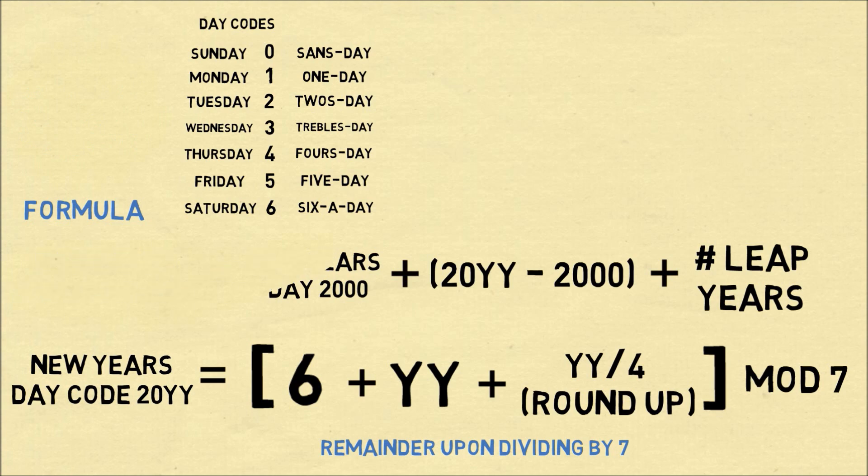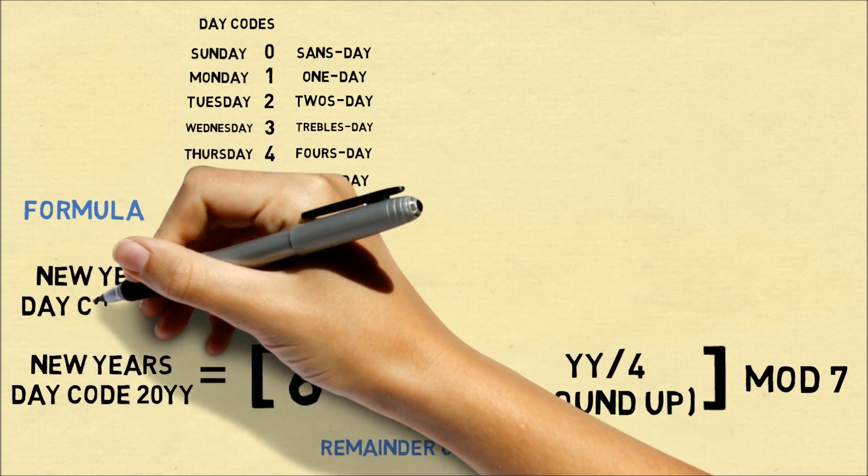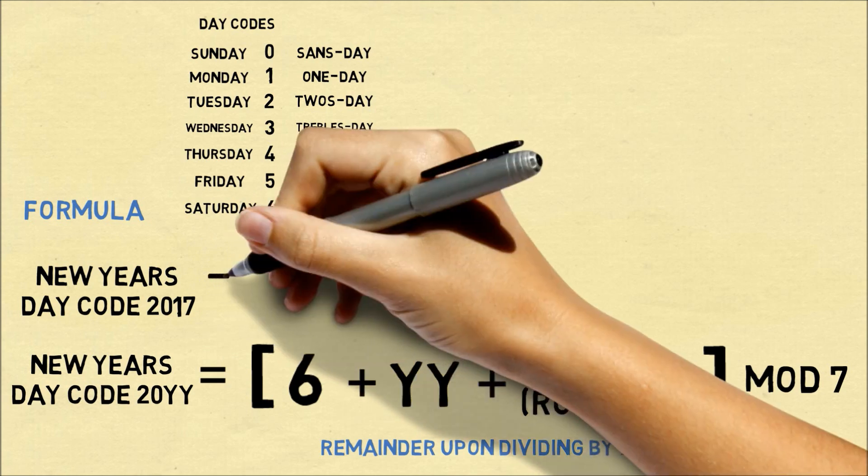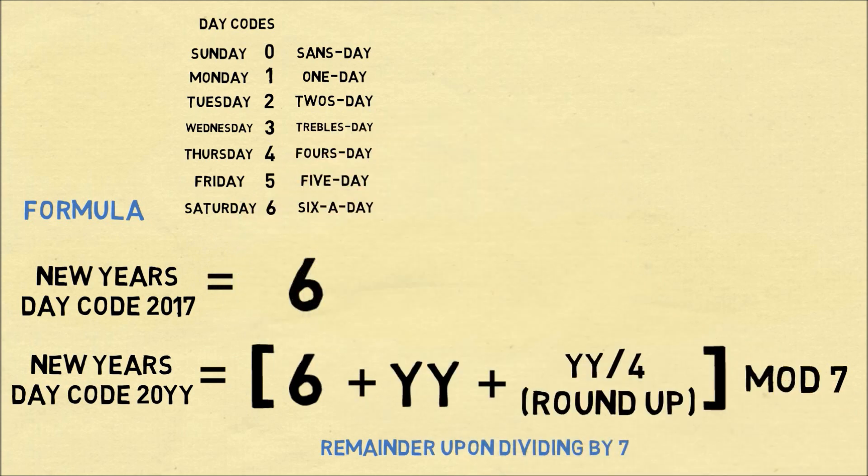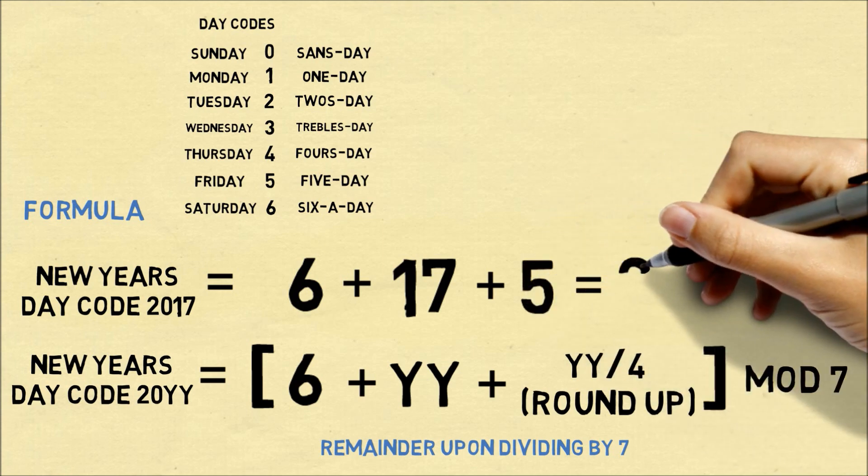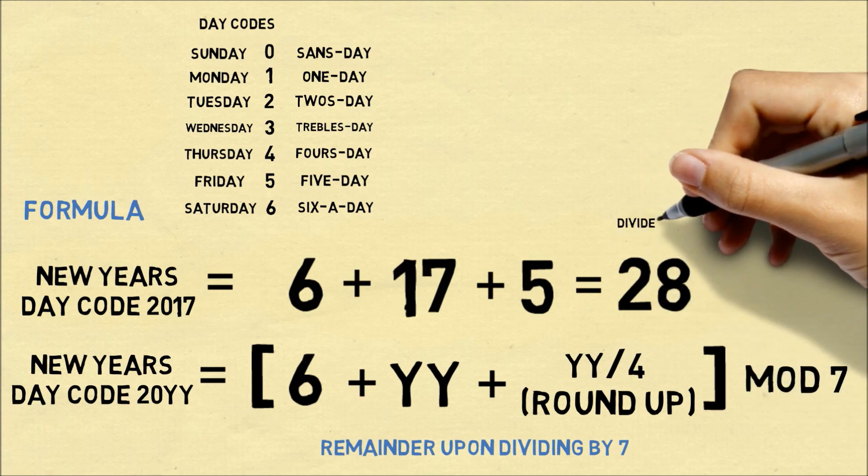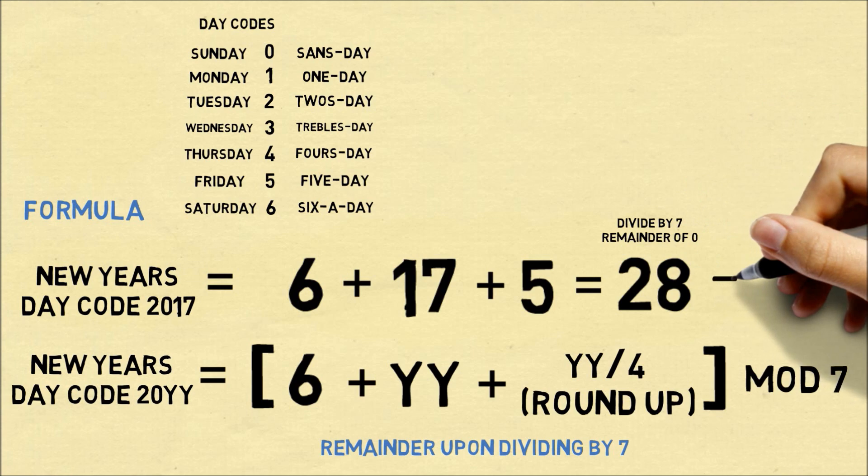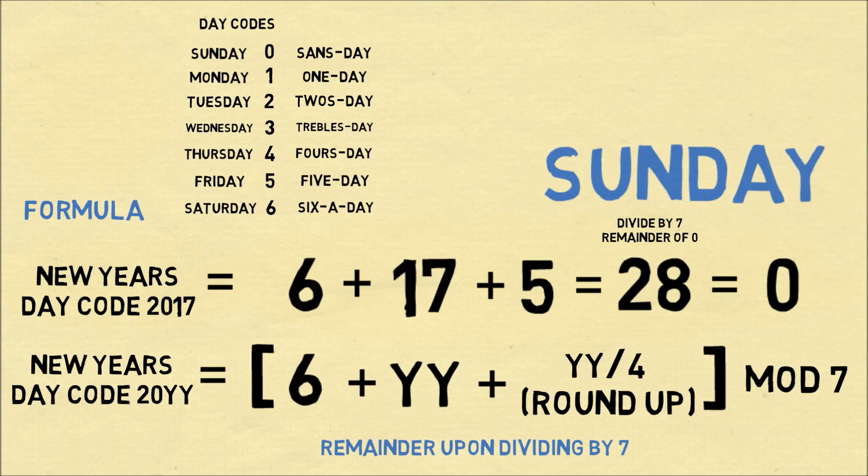So let's try out this formula. It looks complicated, but it'll actually be something that's very simple and you can do it in your head. So let's see which day the New Year 2017 will start. We start out with the six in the formula. The 17 we add to six. And 17 divided by four, rounded up, will be five. So we add six, 17, and five to get 28. When we divide this by seven, there's a remainder of zero. So the day code will be zero. And that means 2017 will start on a Sunday. And you can actually check this. This is a correct formula and it works.